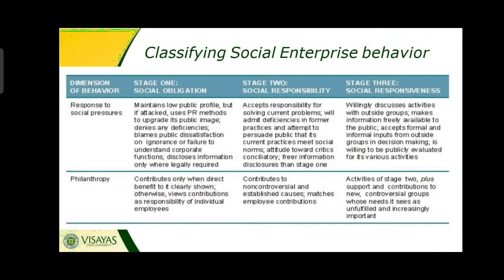Kuratko in 2012 formulated a framework classifying the social actions of corporations into three categories: social obligation, social responsibility, and social responsiveness. This framework illustrates the range of corporate intensity about social issues. Some firms react to social problems through obedience to laws — that is social obligation. Others actively respond and accept responsibility for various programs — that is social responsibility. Still others are very proactive and socially responsive.